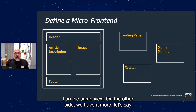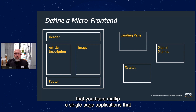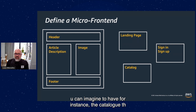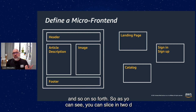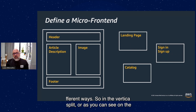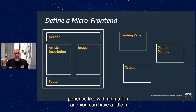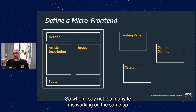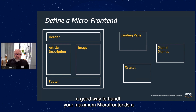On the other side, we have a more controlled way to manage micro-frontends — vertical split. Imagine multiple single-page applications composing the final platform. Using our Netflix example, you can have the catalog as a unique micro-frontend, and the authentication micro-frontend taking care of sign-in, sign-up, and so on. The vertical split is usually used when you want full control of the page, want to create an immersive experience with animations, and have more control on the final outcome. Also, you work this way when you don't have too many teams — I'm talking less than 10 — working on the same application.